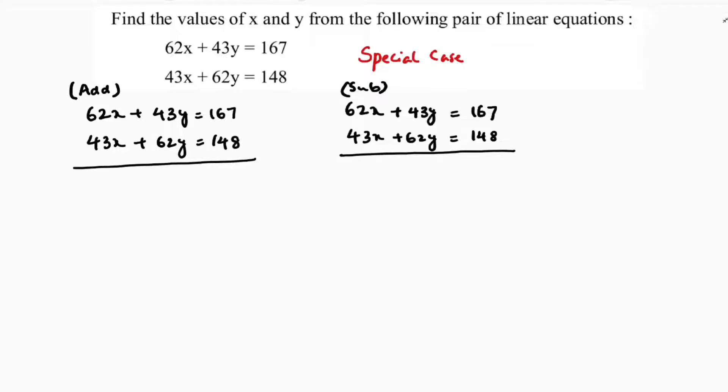Now if I add these two equations, you see 62 plus 43 is 105, so 105x, and here also 105y. And this one: 160, 140, 300, 8 plus 7 is 15, so 315.